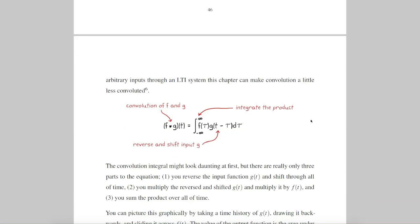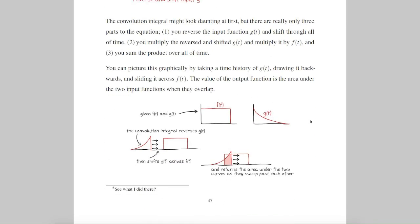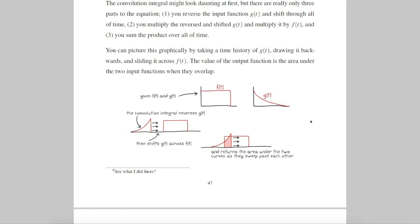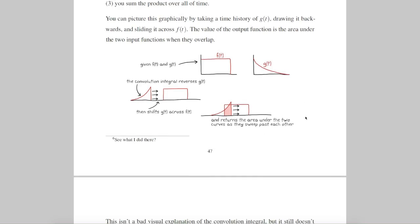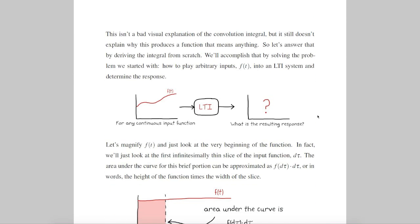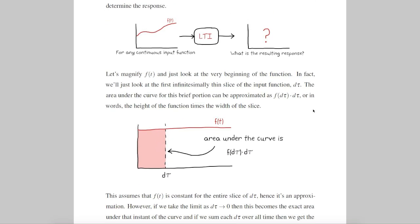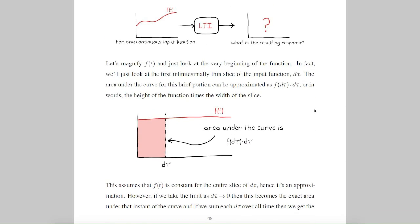Convolution is usually taught as this integral that does this rather bizarre thing: you take one of your input functions and flip it around, and then slide it across the other function and add up the area under the two curves as you slide across. Now this is a great visual, but it doesn't do much for understanding why this works, so we'll build it up from scratch. Remember, we had this arbitrary input f(t), and if we magnify the very beginning of the function — like the first infinitesimally small length of d-tau — then we can claim that the area under the curve is just the height of the function times d-tau.